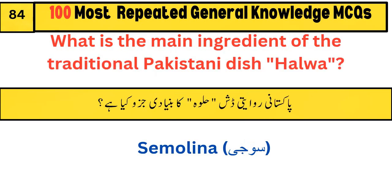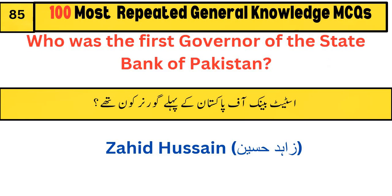What is the main ingredient of the traditional Pakistani dish halwa? Semolina. Who was the first governor of the State Bank of Pakistan? Zahid Hussain.